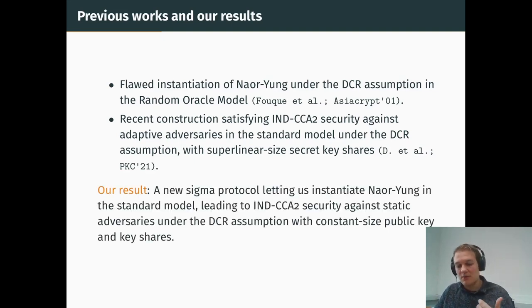In this work, we are proposing a new sigma protocol and a new way to turn it into a non-interactive proof system that lets us instantiate Naor-Yung in the standard model. We have a slightly weaker security because we're only secure against static adversaries, not adaptive. But the public key and key shares don't grow with the number of servers, and so we have a smaller key.